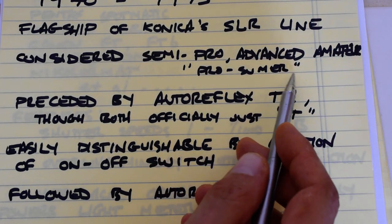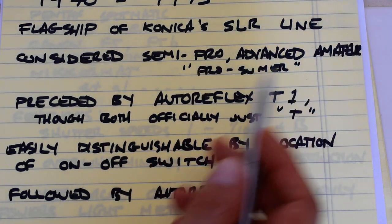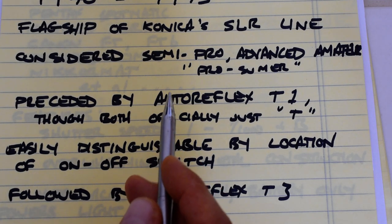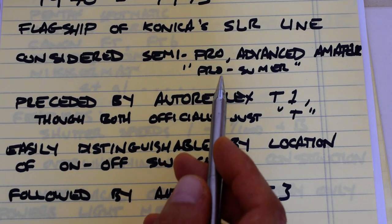It was considered a semi-pro or advanced amateur camera, the terminology that folks used back then. Nowadays we say prosumer. Back then it was just either semi-pro or advanced amateur, not quite professional level but next level down.